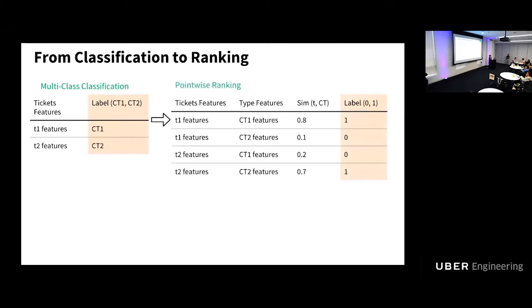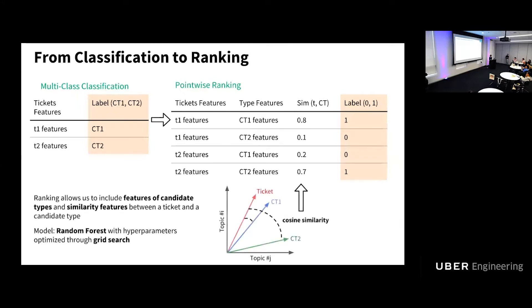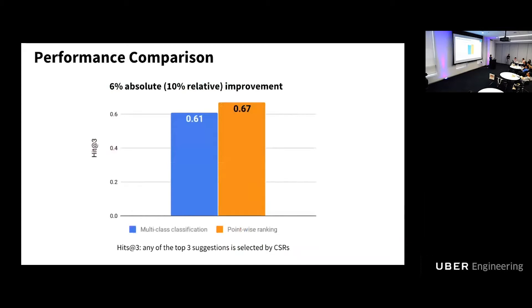This is what we do to convert it into a binary classification and ranking problem. Firstly, we pair each ticket with all the possible content types. And the label will be 1 if there's a match between the ticket and content type, otherwise 0. So by doing so, we convert it into a binary classification problem. At the same time, this approach also allows us to include the candidate type as features and also the similarity between the ticket and candidate type as features. So our feature space is enriched and model performance is better. So here is a comparison between a multi-class classification model and a ranking model. We found that if the metrics is hit at three, that means whether any of the top three suggestions is used by our agent or not, the ranking approach can outperform the multi-class classification approach by 10% more.